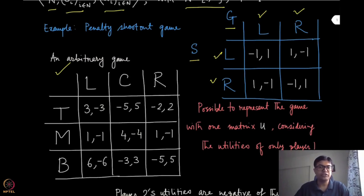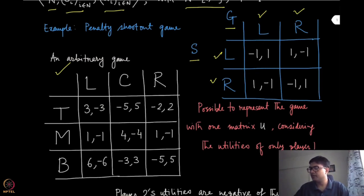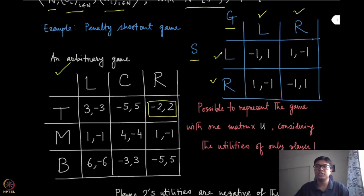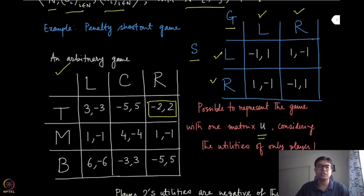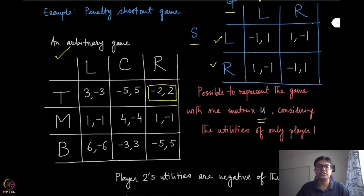Because of this special structure, you can represent this game in the form of one single matrix — you can just ignore the second part. In every entry there are two elements, but you already know that the second element will be the negative of the first. So you can represent the whole game using just a single matrix. Let us represent that matrix by U, the utility of the first player. The second player's utility is just minus U, and that is why it is called a matrix game.